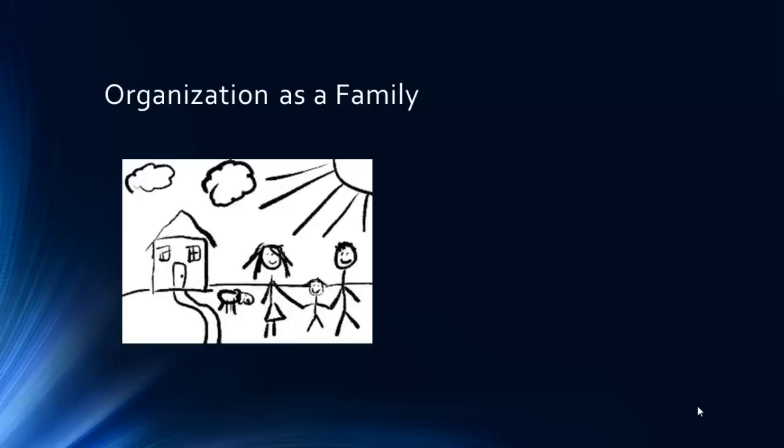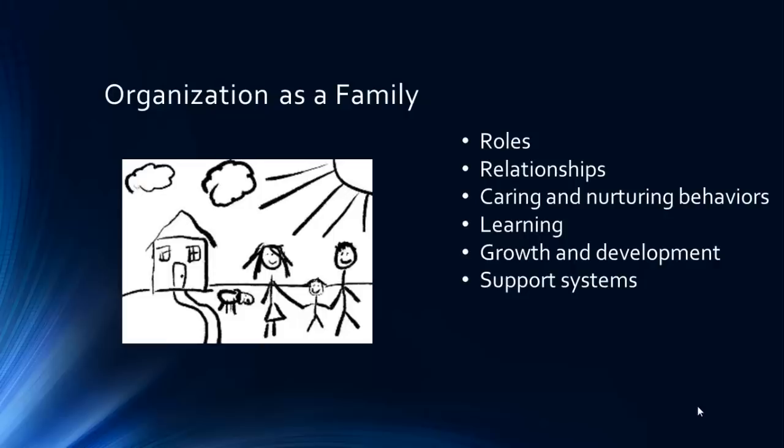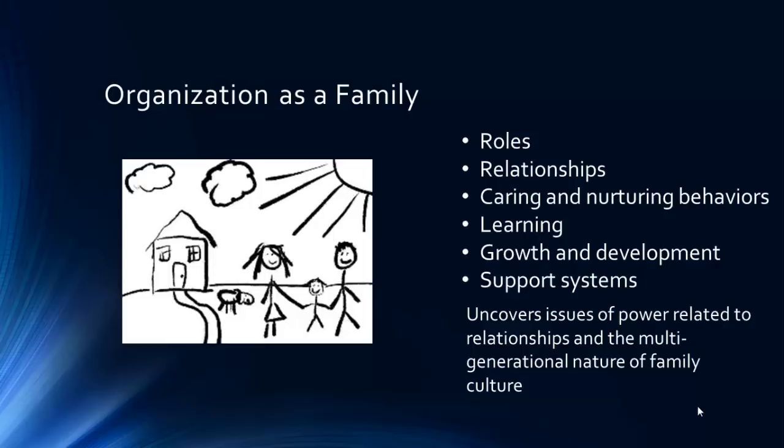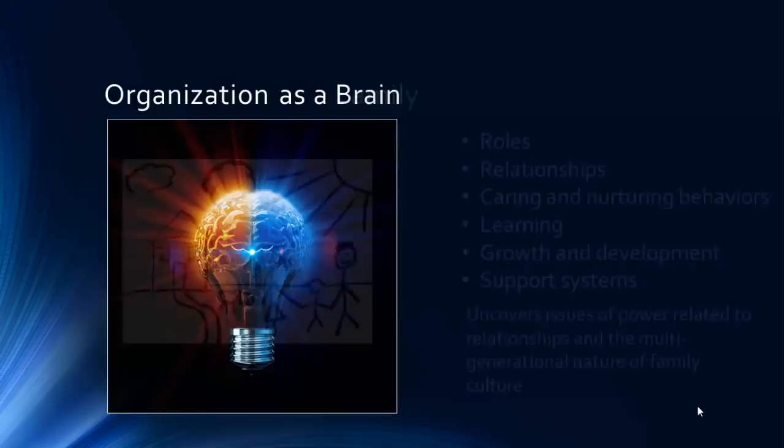The family metaphor is not articulated separately by Morgan, but is a specific type of cultural lens that can be useful when examining certain organizations. When we look at an organization as a family, we begin to see elements such as roles, relationships, caring and nurturing behaviors, learning, growth and development, and support systems that help the members of the organization rely on one another. This metaphor can also uncover issues of power related to relationships and to the multi-generational nature of family culture. The strengths and weaknesses of this metaphor are similar to the culture metaphor, with the added element of emotion that can color our perception when using this metaphor.